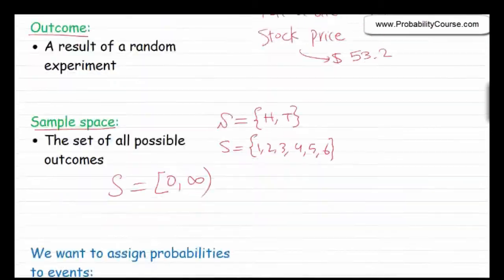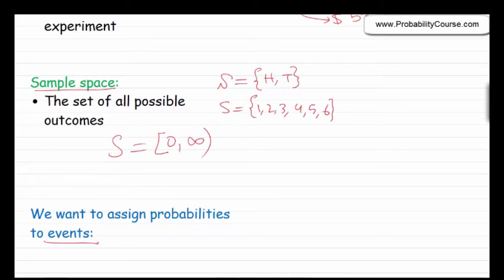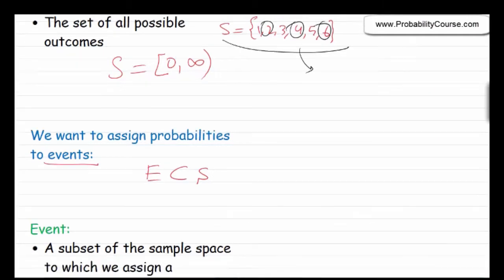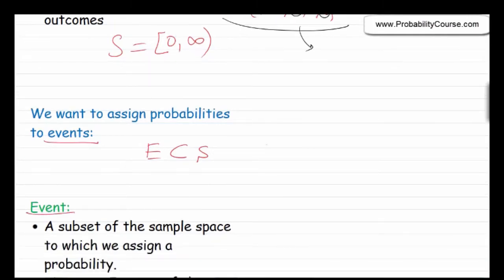What we want to do is assign probabilities to events. For example, I might ask: I roll a die, and what is the probability of the event that I observe an even number? When you roll a die, your outcome is one of the six possible numbers, but I'm interested in the probability of the event {2, 4, 6}. You might guess that the probability of this event is 1/2. An event is basically a subset of the sample space to which we assign probability. So if I define the event {2, 4, 6}, I can write: probability of this event equals 1/2.